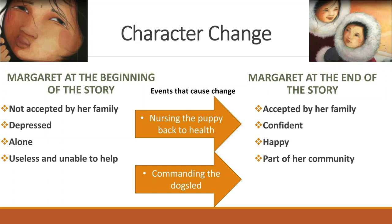By understanding this character change, we really have a better idea of what the story is all about. When you think about it, the whole story revolves around Margaret and how she starts out as a sad child that's not accepted by her family, and how she transforms into a confident, happy kid that's part of her family and her community again.